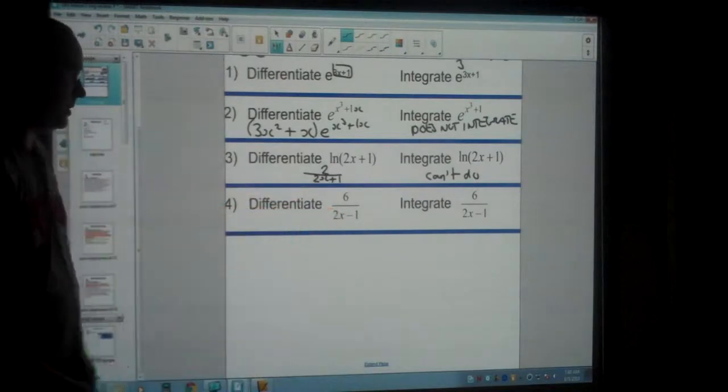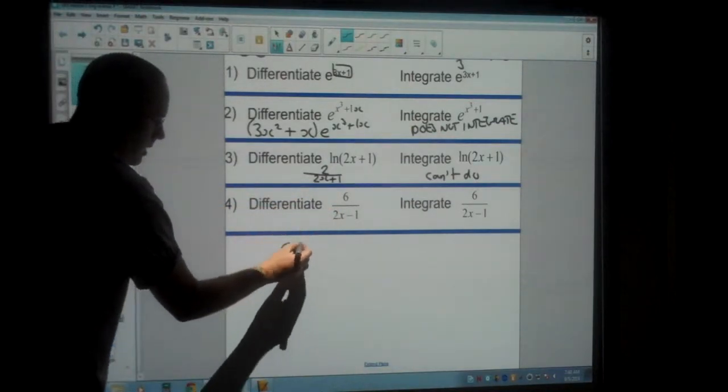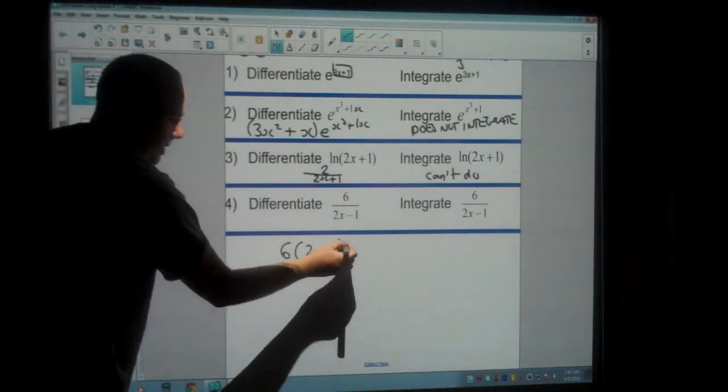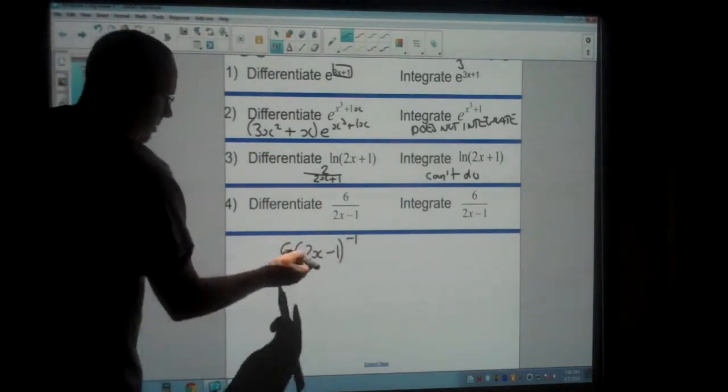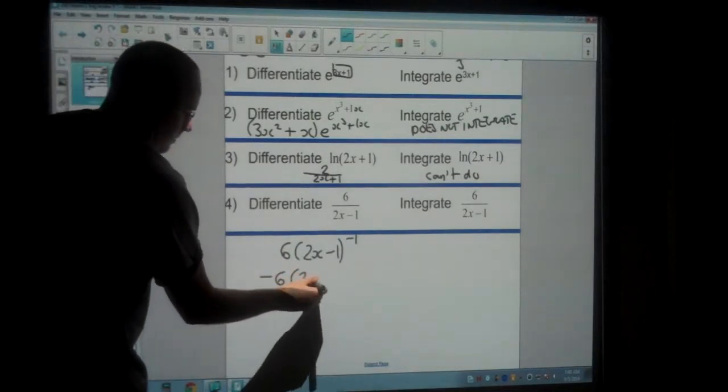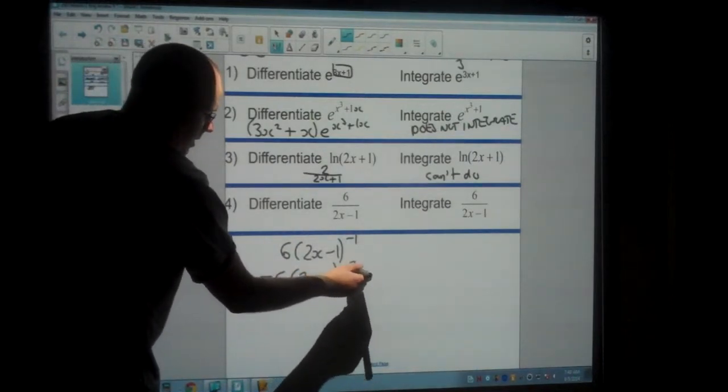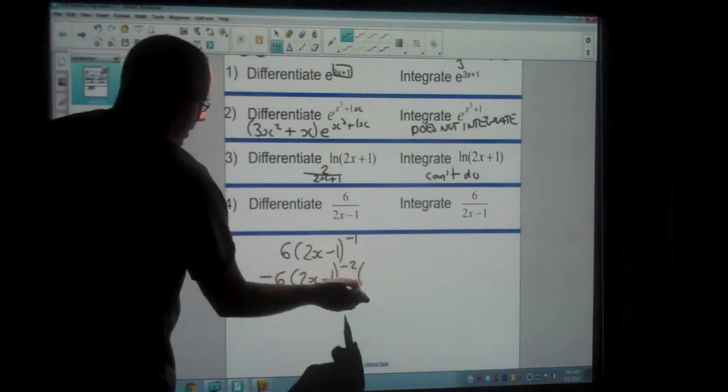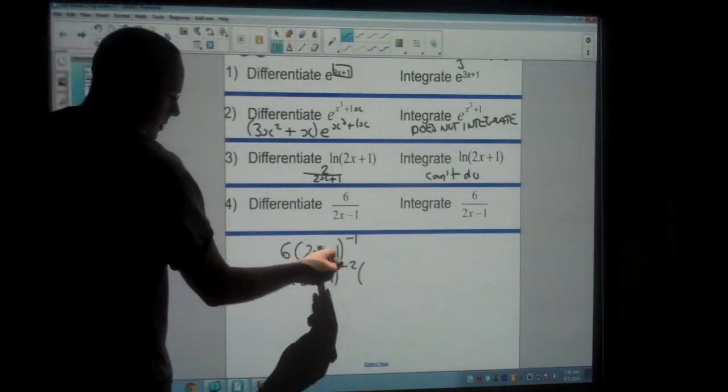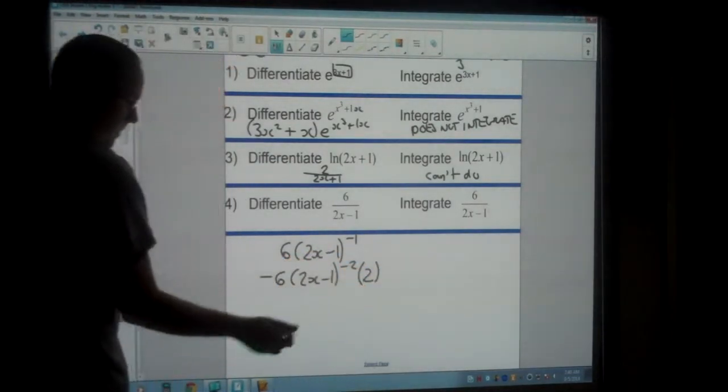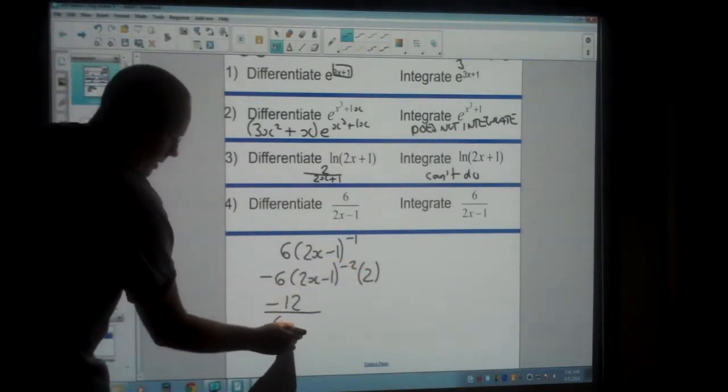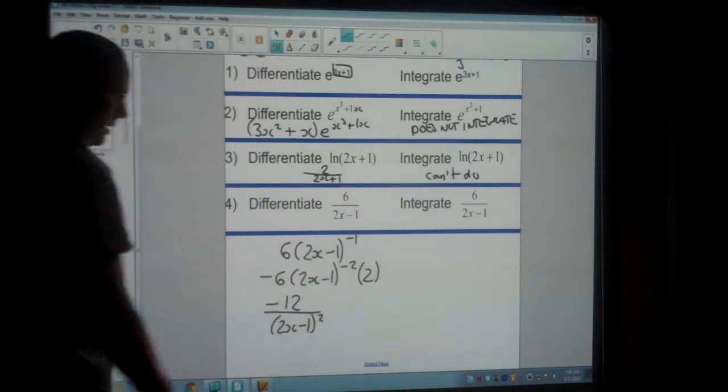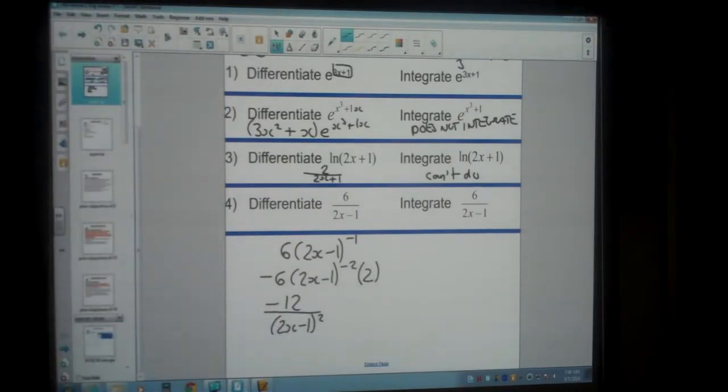Now to differentiate this, this is actually going to be our chain rule. So 2x minus 1, we can write as 2x minus 1 to the power of negative 1. So to differentiate, bring the power to the front, decrease the power by 1. And then also times by the derivative of what's inside the parentheses, which is 2. Negative 6 times 2 is negative 12. And we can bring the 2x minus 1 to the bottom. As it's negative 2, we can give it a positive exponent.